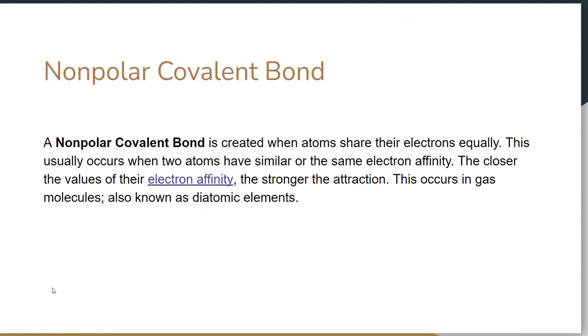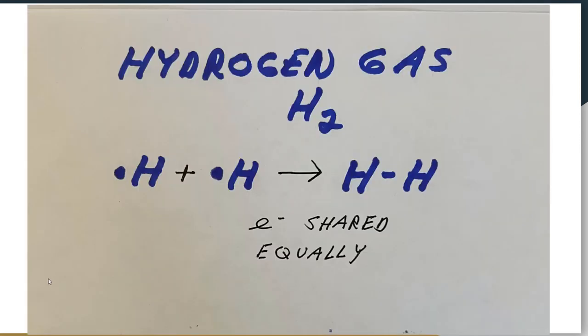Nonpolar is created when atoms share their electrons equally. This usually occurs with the diatomic elements. If you go back to the idea of diatomic elements, they are found in nature as two atoms of the same one. If they're the same atom, neither one's going to have a higher affinity for the electron, so it's going to be considered nonpolar. A good example of this is hydrogen gas. Hydrogen gas H2 is going to share those two electrons between each hydrogen equally, and each hydrogen will have two electrons in its outer energy level.